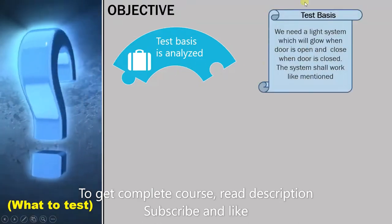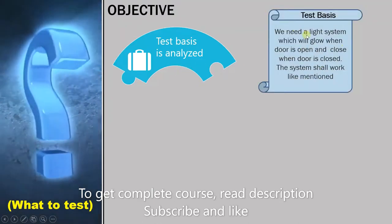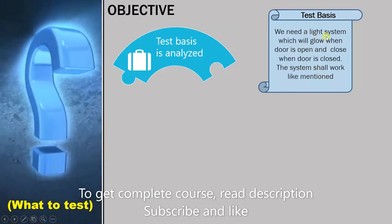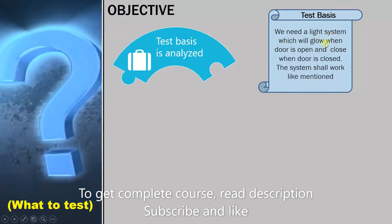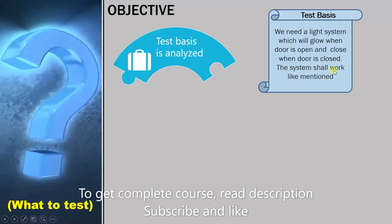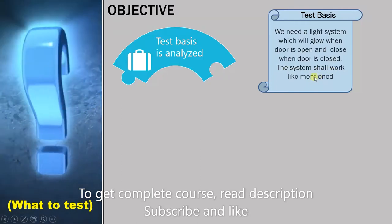Let's say you have this requirement. While reading the requirement, ask yourself what you have to test here. We need a light system which will glow when the door is open and close when the door is closed. The system shall work like mentioned. This is the customer's requirement.